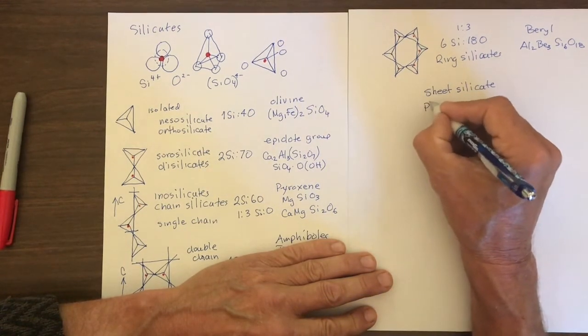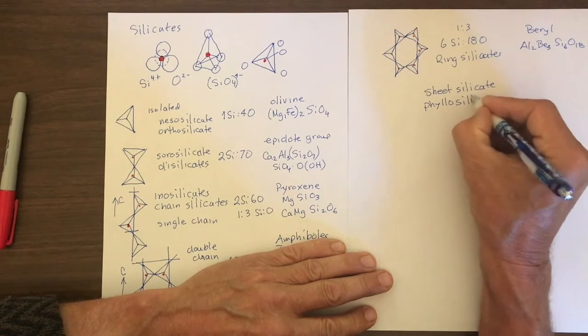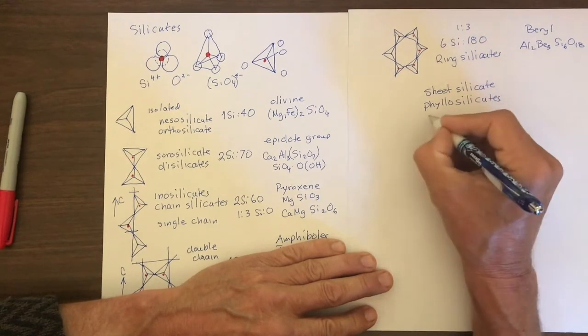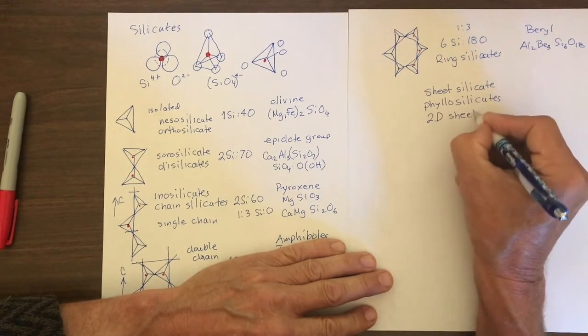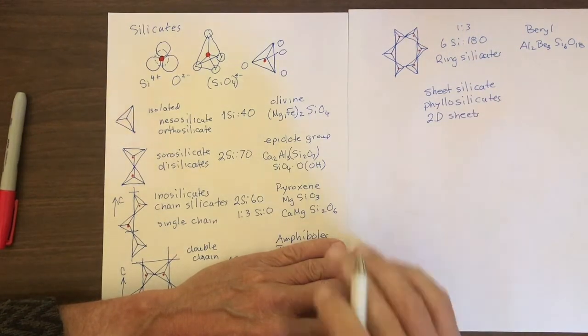Okay, and they're also called phyllosilicates. So 2D sheets. Okay, so let's look at how these work.